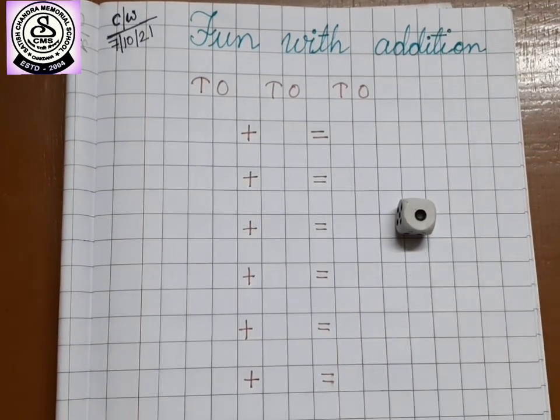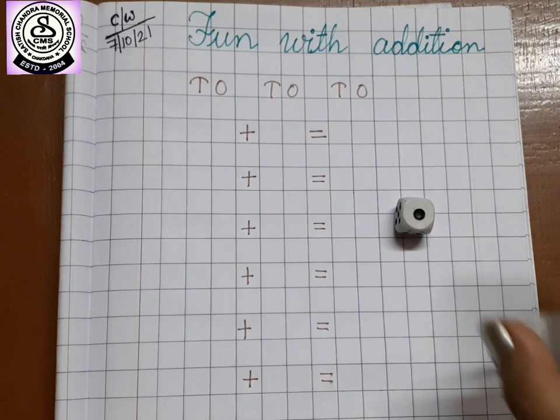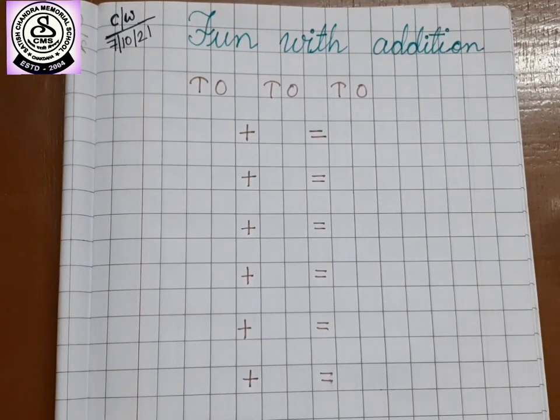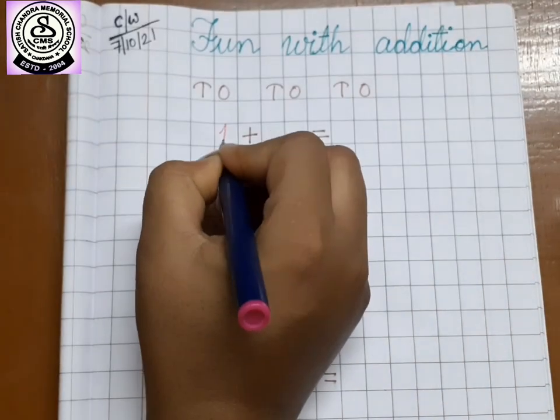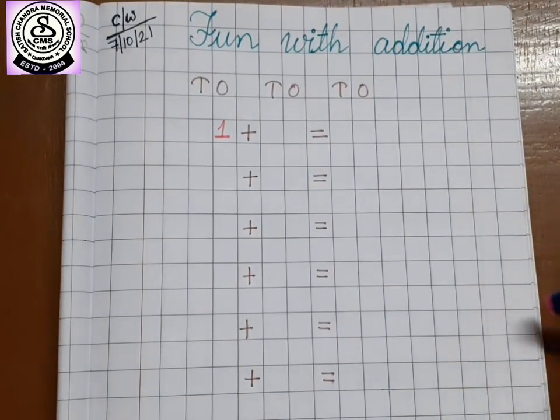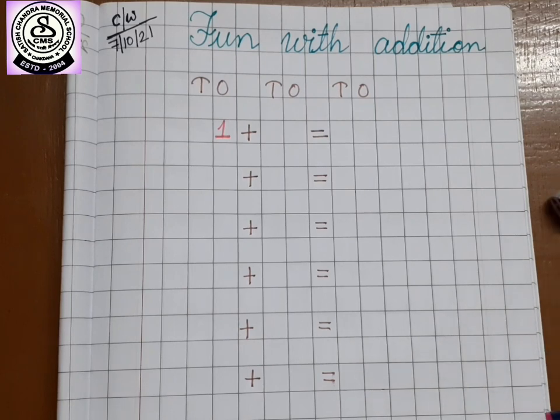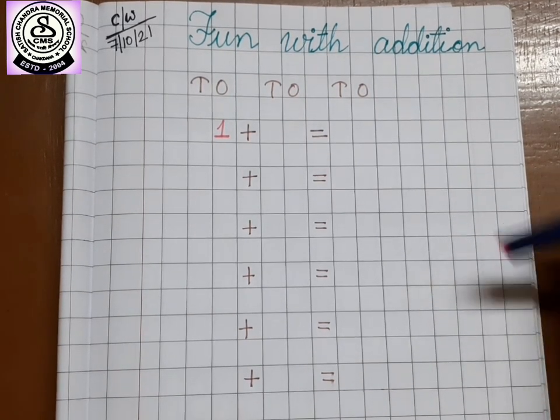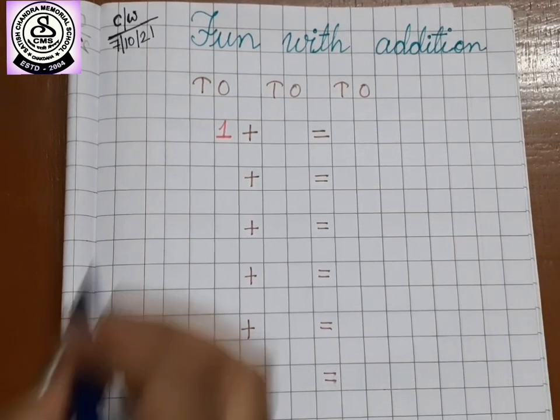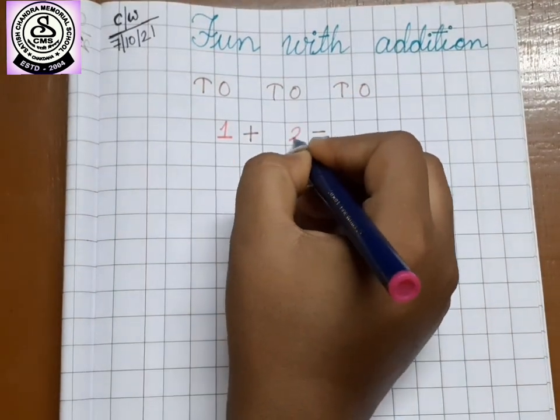See how much I have got? One. So, I will take my pen or pencil and write here one. Again, I am going to roll it. Let's roll two. So, how much we have got? Two. So, let's write two here.